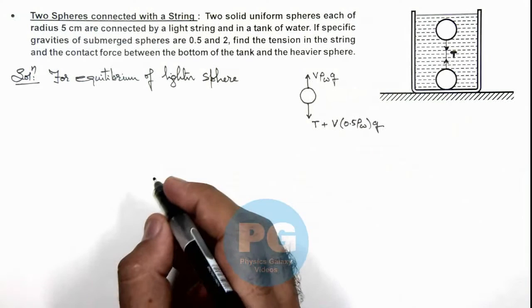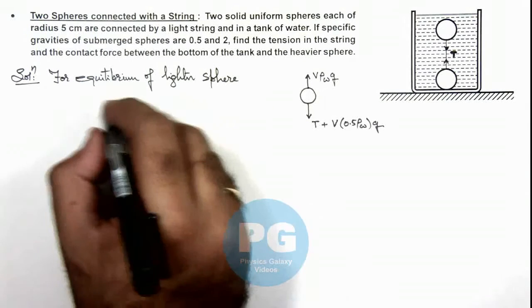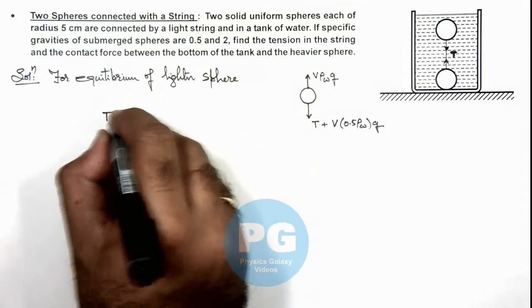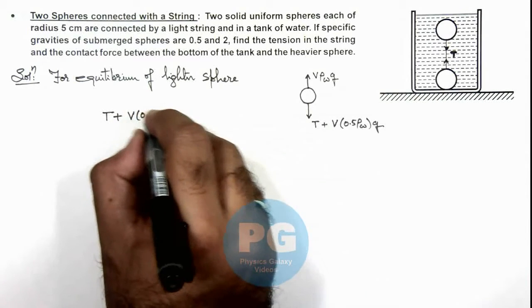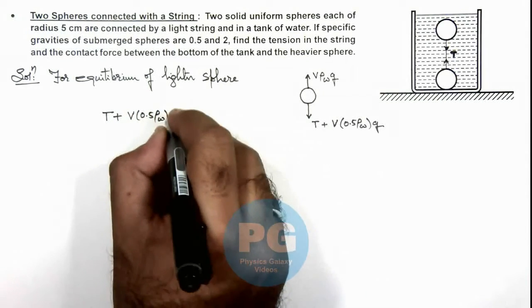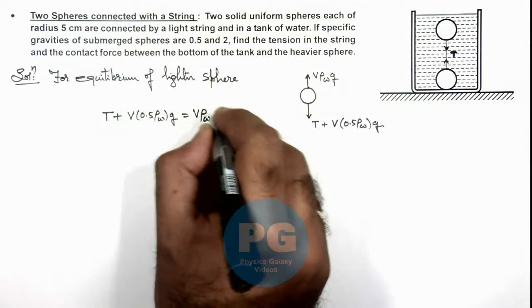So in this situation here we can write for this lighter sphere T + V × 0.5 ρ water × g to be equal to V ρ water g.